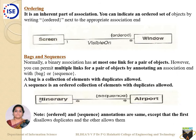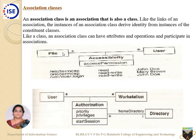An example given here is 'Itinerary' and 'Airport.' You have multiple itineraries and multiple airports, but these itineraries have sequenced airports — one after another. For example, if you are going from Hubli to Delhi, you will first reach Mumbai, then through Mumbai you will reach Delhi. This is a sequence of those airports. So this covers bags, sequences, and ordering. Then comes one more defined term towards association: 'association class.'